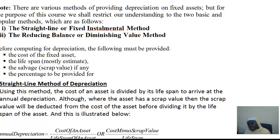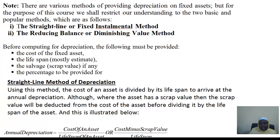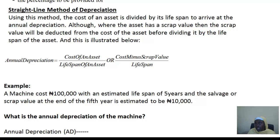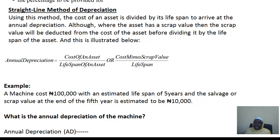We start with the straight line or fixed installment method. The straight line method of depreciation is very simple. Before you compute for depreciation, the cost of the asset will be provided, the percentage, the scrap value if any, and the lifespan of that asset. You need these four basic pieces of information. The straight line method is simply dividing the cost of the asset by the lifespan of the asset.